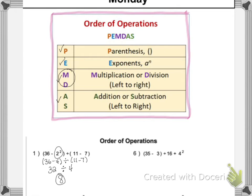So let's take a look at our next problem. In this next one, we have the value of 35 minus 3, divided by 16, plus 4 squared. So I'm going to go ahead and erase the markings that I made on my PEMDAS chart, so we can start all over again.